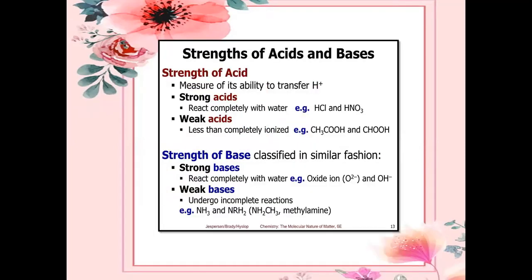Strength of acids and bases: the strength of an acid is a measure of its ability to transfer hydrogen ions. The greater the ability to transfer hydrogen ions, the stronger the acid. Strong acids react completely with water — they are almost completely dissociated. For example, HCl and HNO3 are strong acids. Weak acids are less than completely ionized — for example, CH3COOH and HCOOH. The strength of a base is classified in a similar way, based on its ability to accept hydrogen ions.